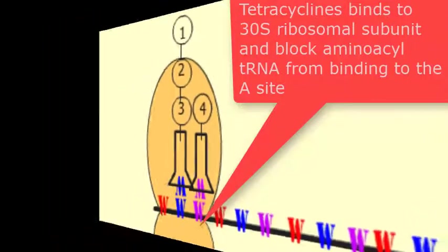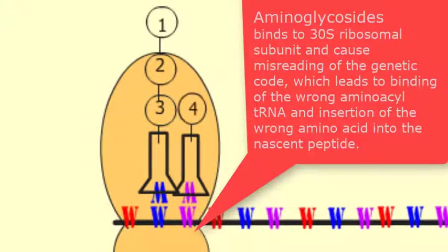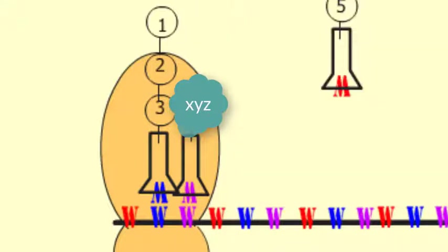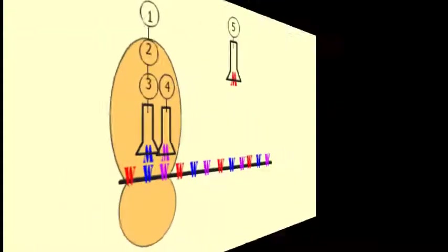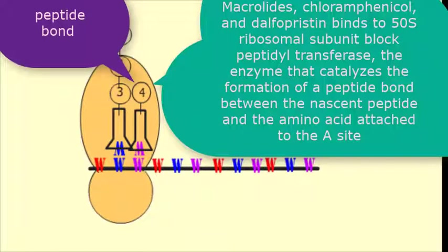Aminoglycosides bind to the 30S ribosomal subunit and cause misreading of the genetic code, which leads to binding of the wrong aminoacyl-tRNA and insertion of the wrong amino acid into the nascent peptide.